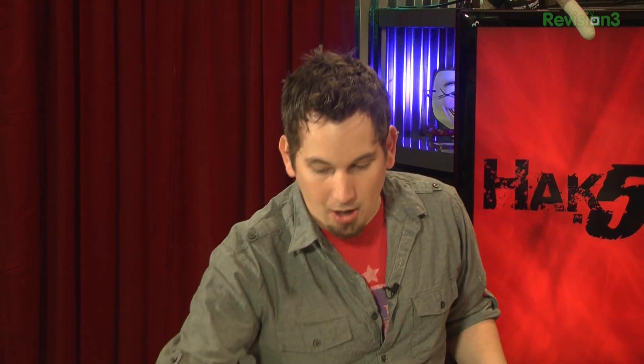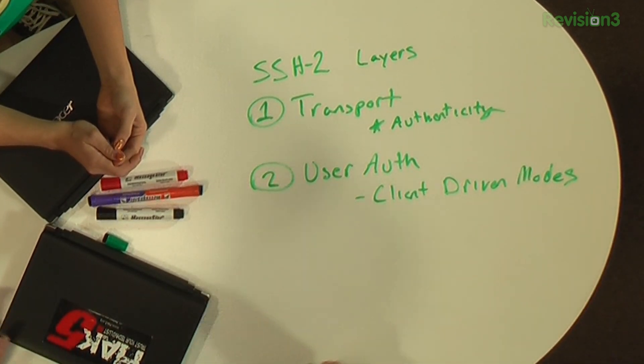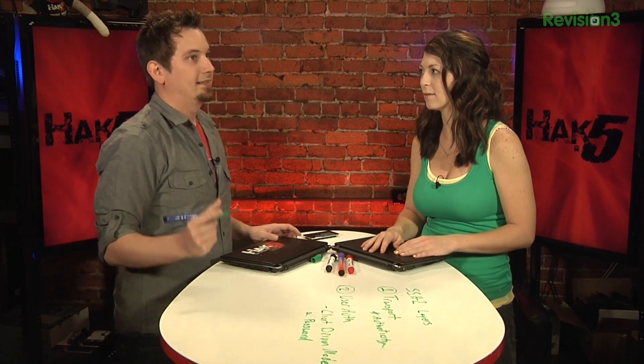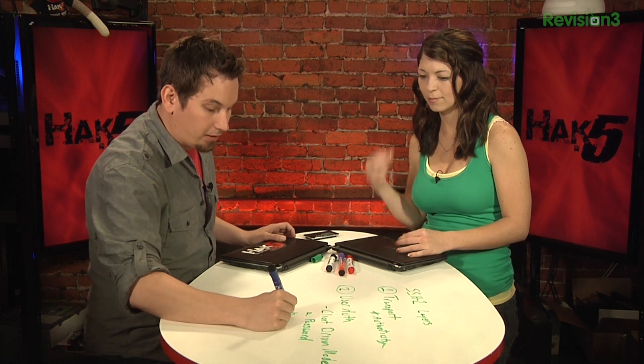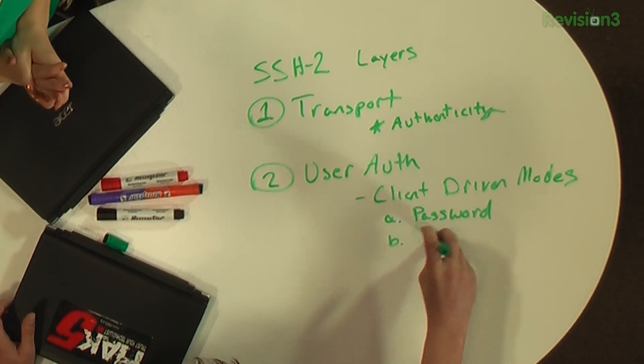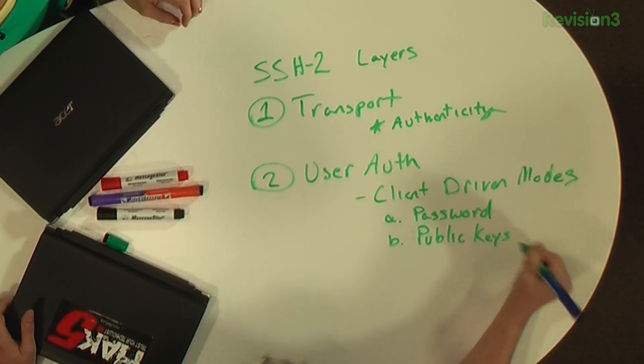As the client, you can request many different kinds of authentication modes. When you connect to an SSH server, it doesn't demand a password or a private key — it does what you set it to do. The first mode we've already talked about is password, like what I did last week with PuTTY. The next one — and this is what we're talking about this week — would be public keys.